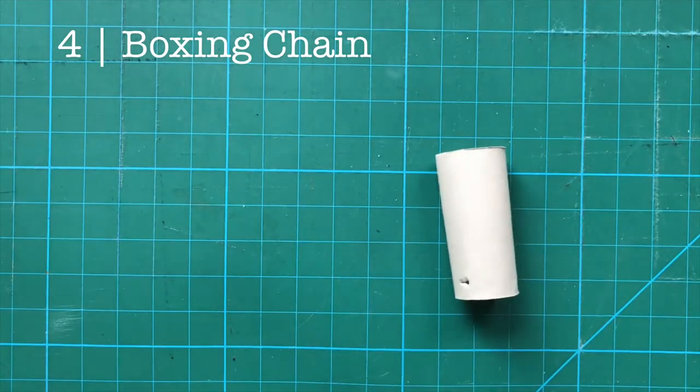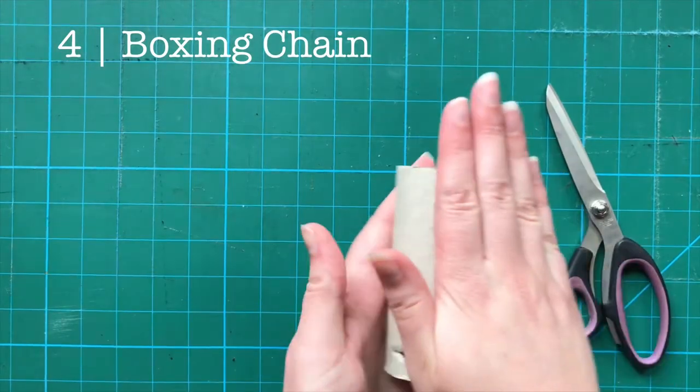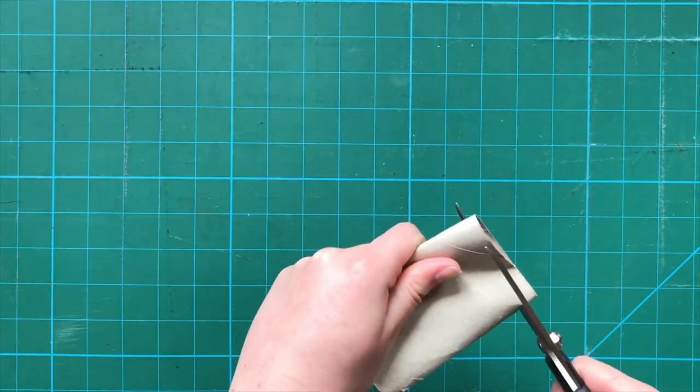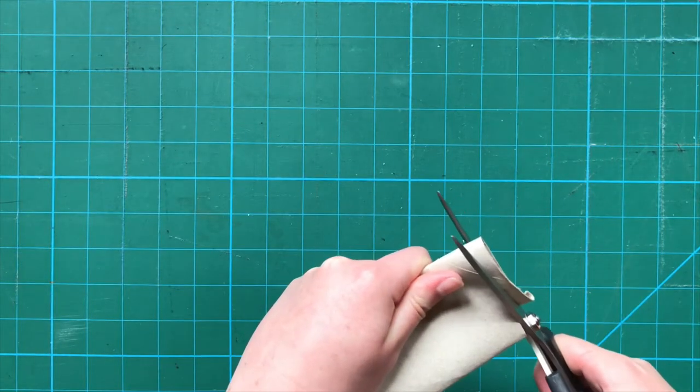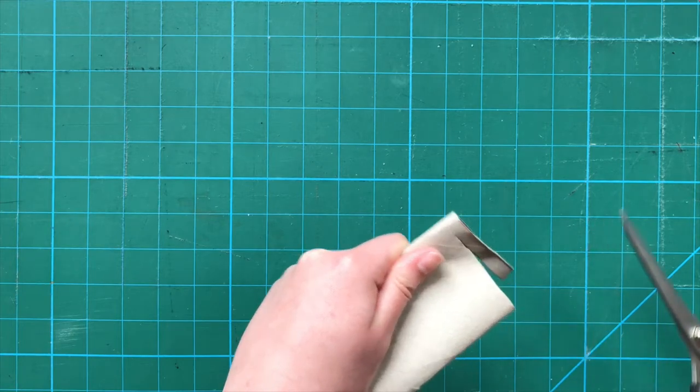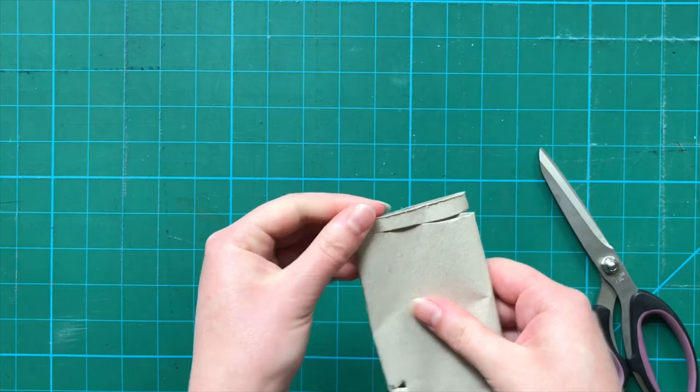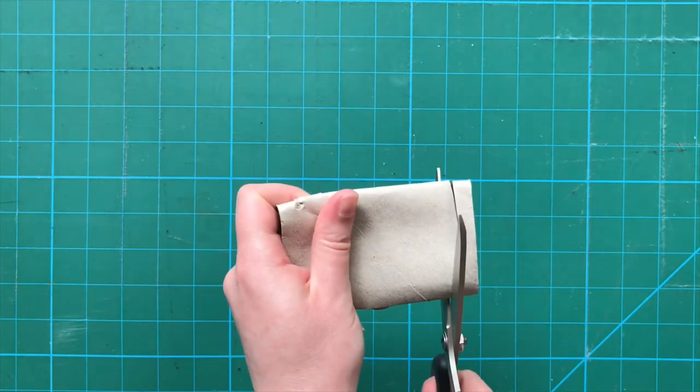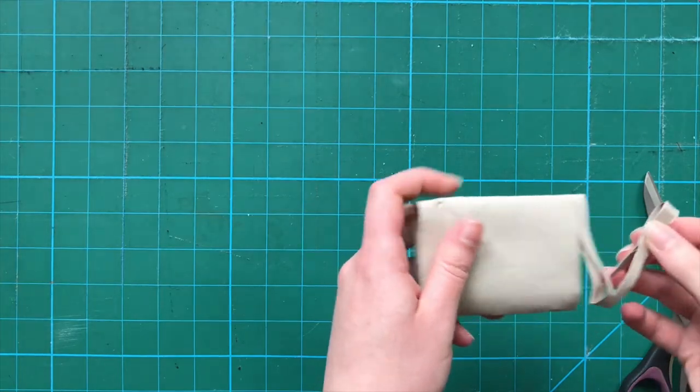Number four, boxing chain. For this you'll start by squishing the tube flat. Then cut a quarter inch strip along one side until it's almost all the way across. Then flip the tube and do it again just below.